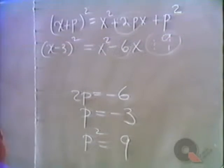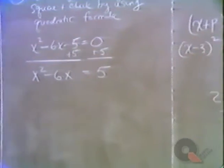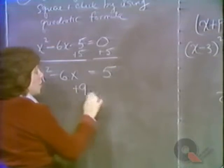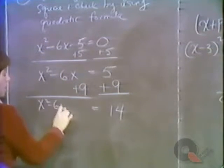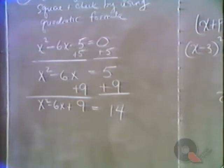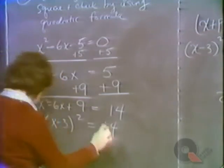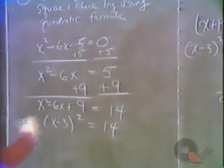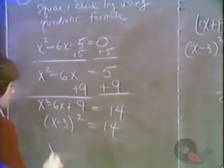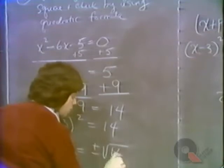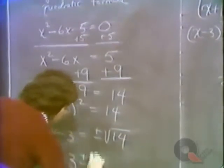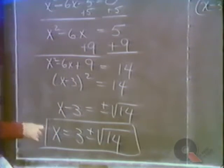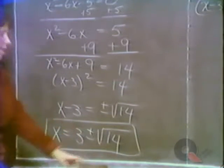Since this is an equation, we are free to add 9 to both sides. On the right we get 14, and on the left we have x squared minus 6x plus 9, which is x minus 3 squared. We now solve by extracting roots: x minus 3 equals plus or minus the square root of 14. Adding 3 to both sides: x equals 3 plus or minus the square root of 14. So x equals 3 plus root 14, or x equals 3 minus root 14.